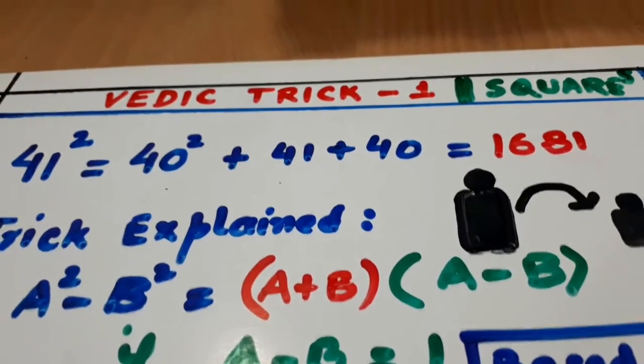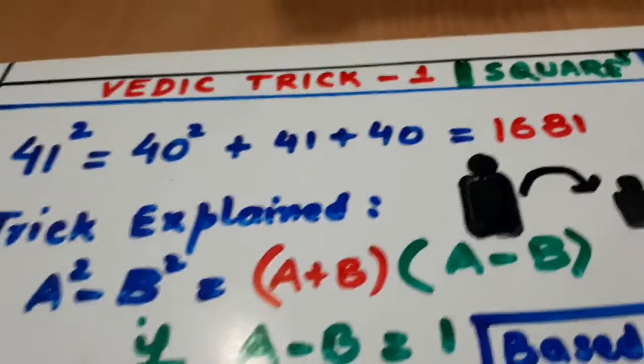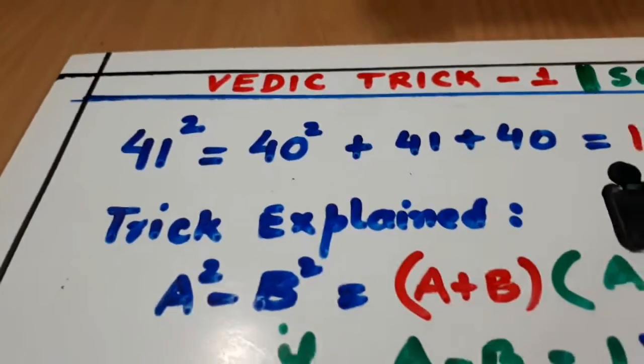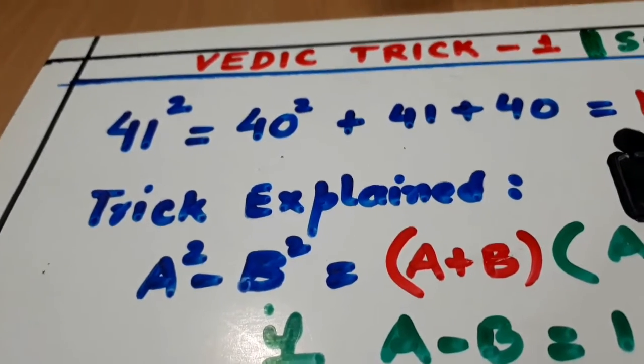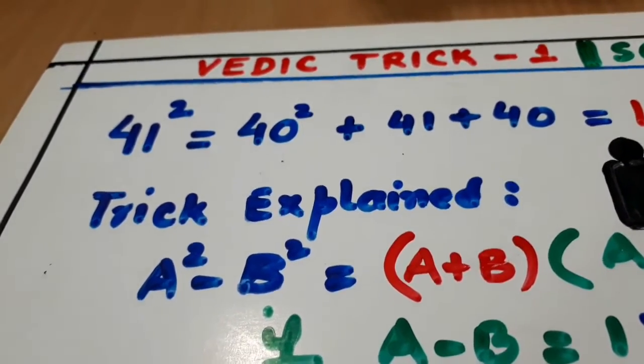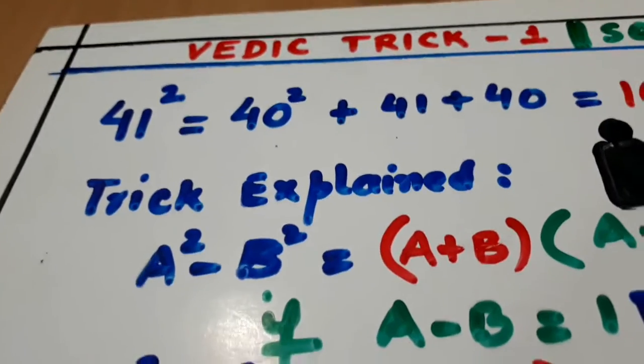Look here. Vedic trick number one. It is based on squares. Now I am giving you an example. 41 square. If you want to know about 41 square Vedic trick, it is very simple.